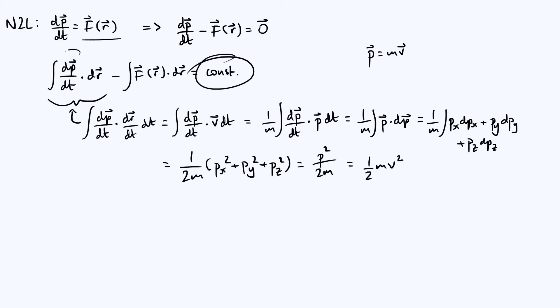So this first term, that whole first term on the left-hand side of the equation, is just a kinetic energy. And so what we have found then is that ½mv² minus the integral of f(r) dot dr is just a constant.